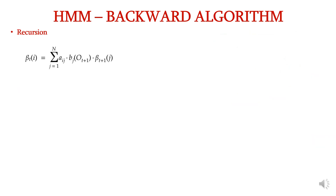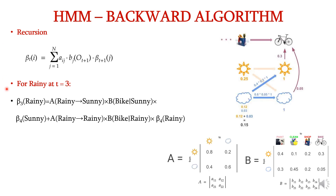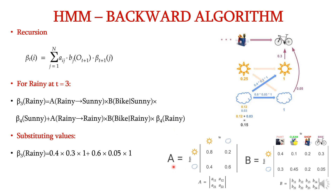Similarly, applying the recursion equation for the rainy state at time step t=3: beta_3(rainy) = a(rainy→sunny) × b(bike|sunny) × beta_4(sunny) + a(rainy→rainy) × b(bike|rainy) × beta_4(rainy). Substituting: 0.4 × 0.3 × 1 + 0.6 × 0.05 × 1 = 0.15. So beta_3(rainy) = 0.15.